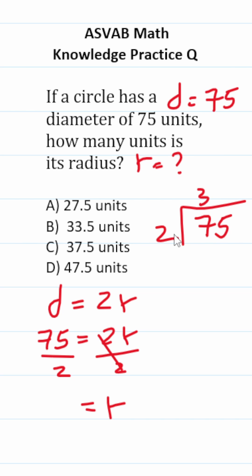2 goes into 7, 3 times without going over. 2 times 3 is 6. 7 minus 6 is 1. Bring down this 5. 2 goes into 15, 7 times without going over. 2 times 7 is 14. 15 minus 14 is 1.